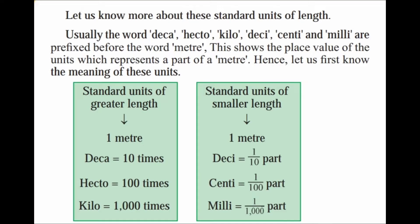Standard units of greater length: 1 meter; decameter is 10 times; hecto is 100 times; kilo is 1000 times. Standard units of smaller length: deci is 1 by 10 part; centi is 1 by 100 part; milli is 1 by 1000 parts.